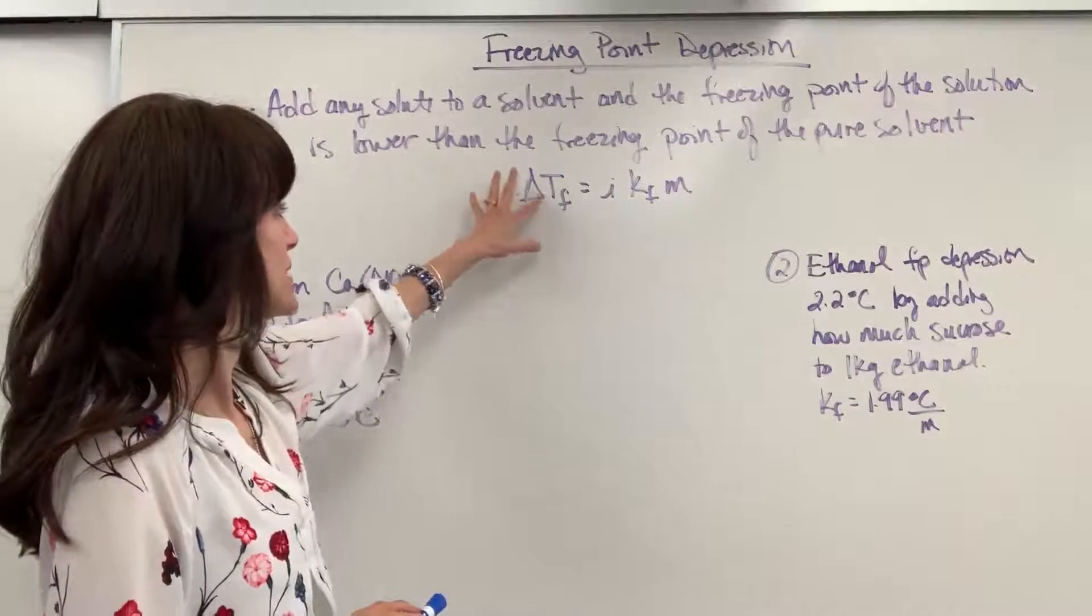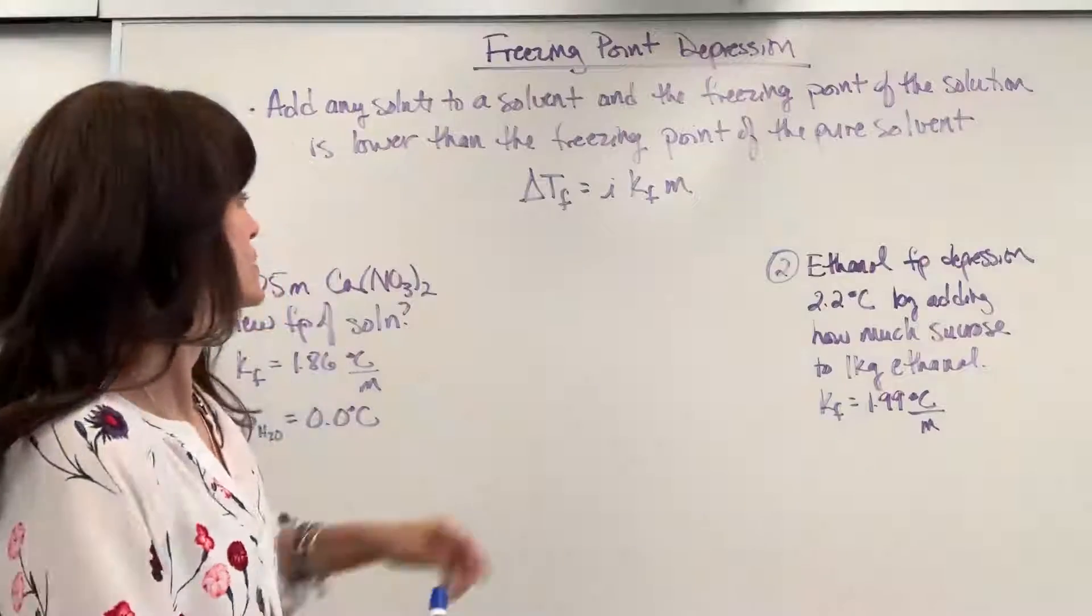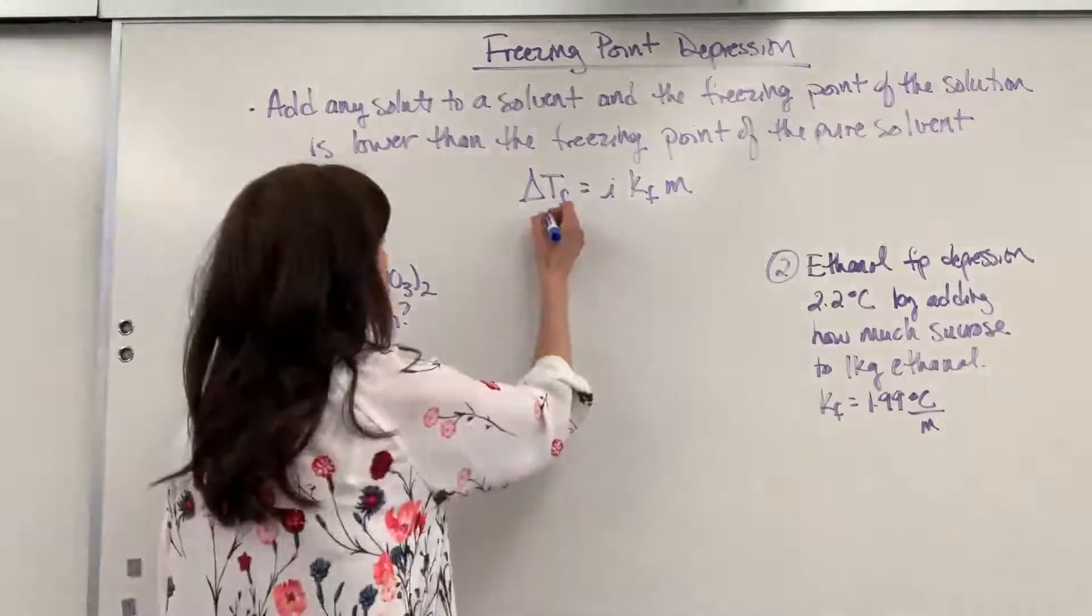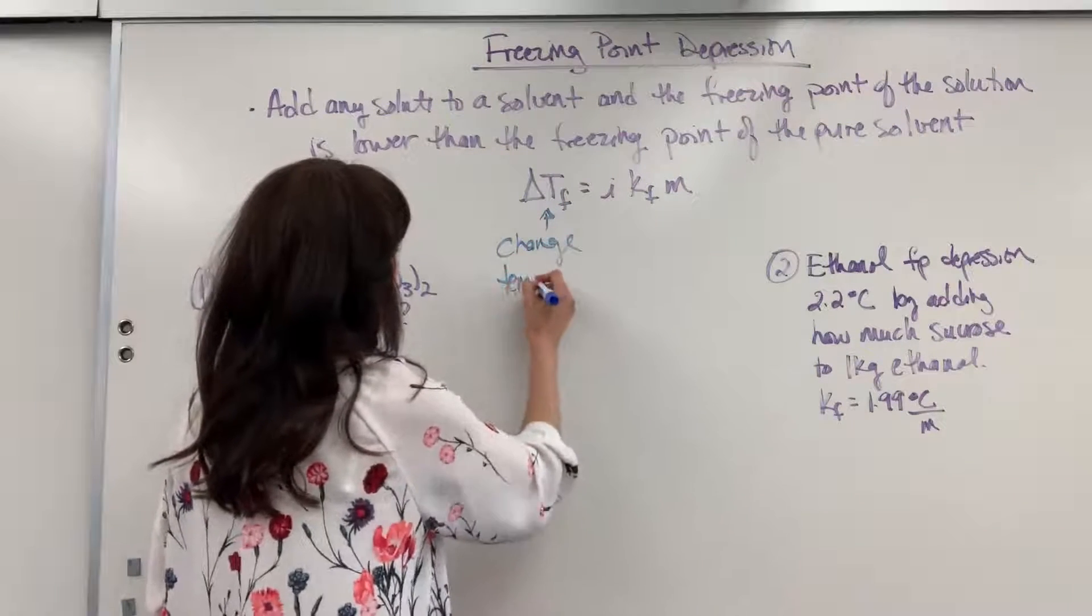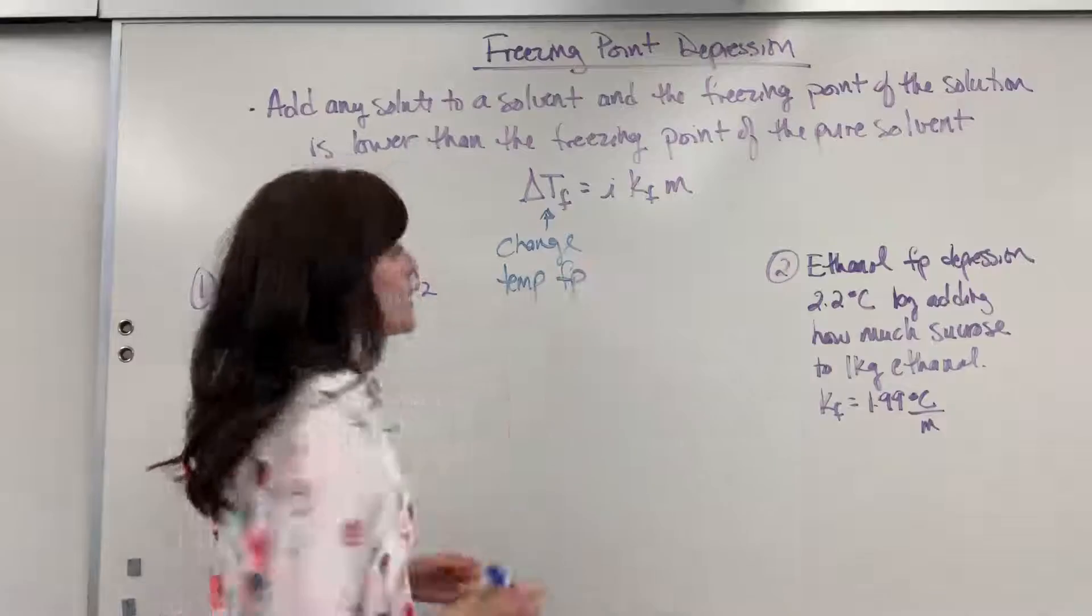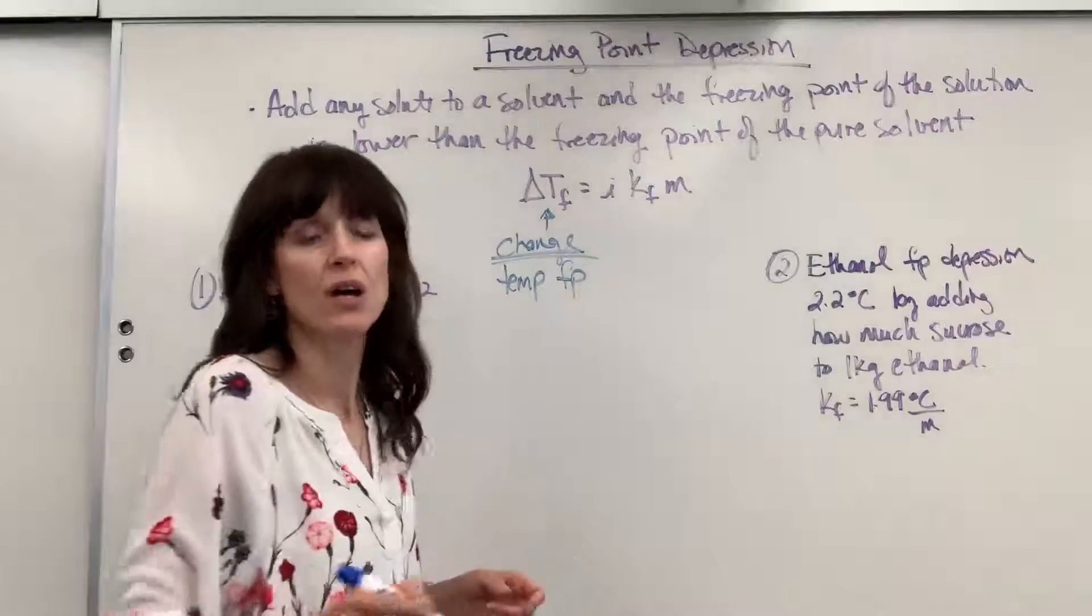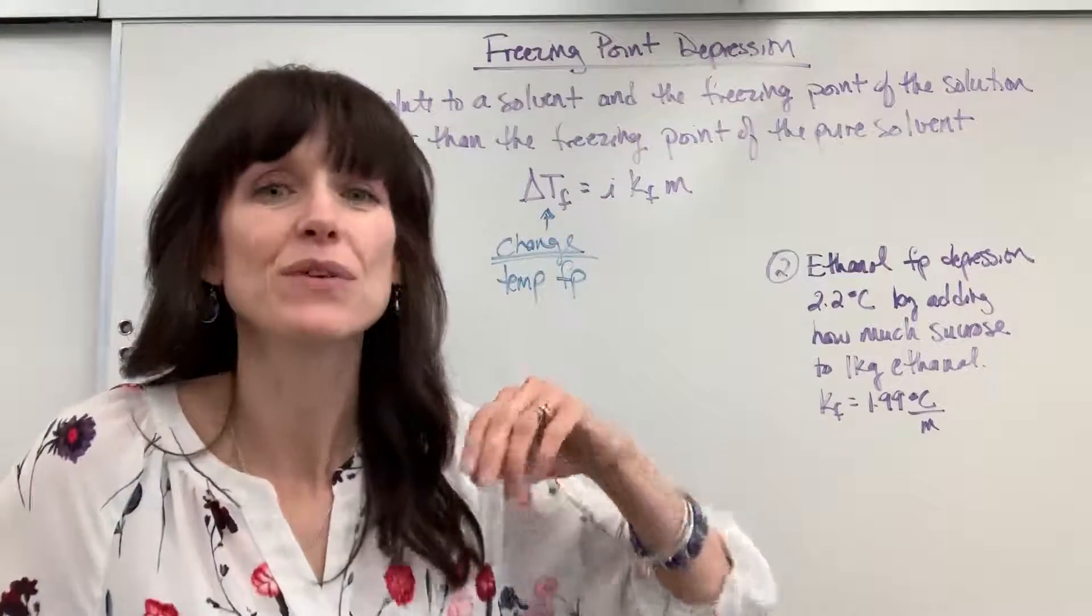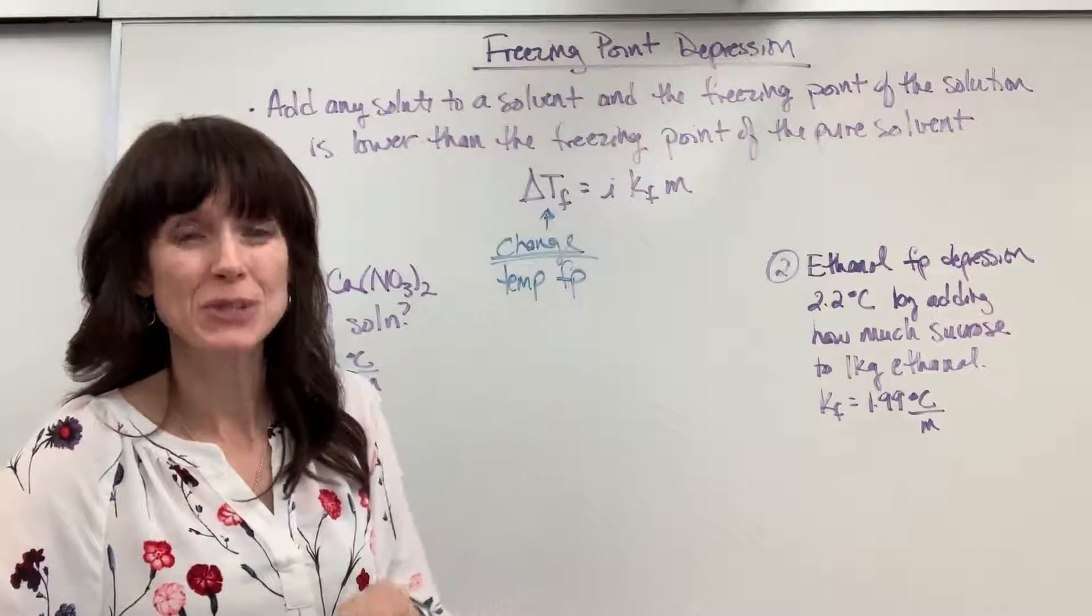It is delta T sub F equals I KF times M. Let's go ahead and label everything on this. So notice this delta means change. This is the change in the temperature for the freezing point. Now the important thing on this is that word change. When you get this answer, the delta T, that doesn't give you the new temperature. It tells you how low the temperature goes.